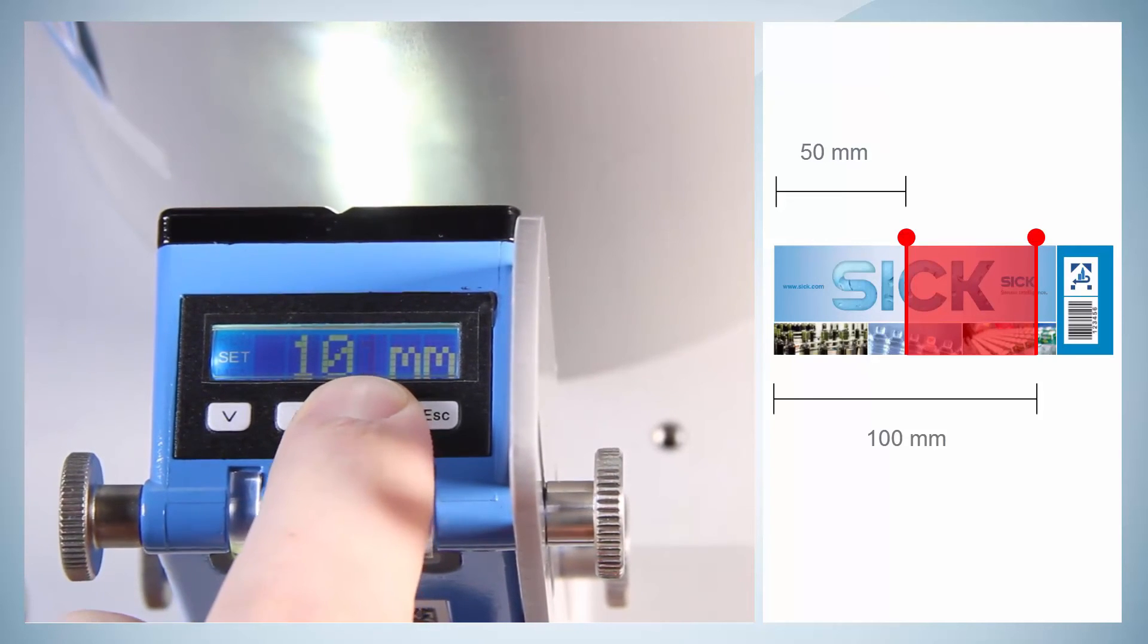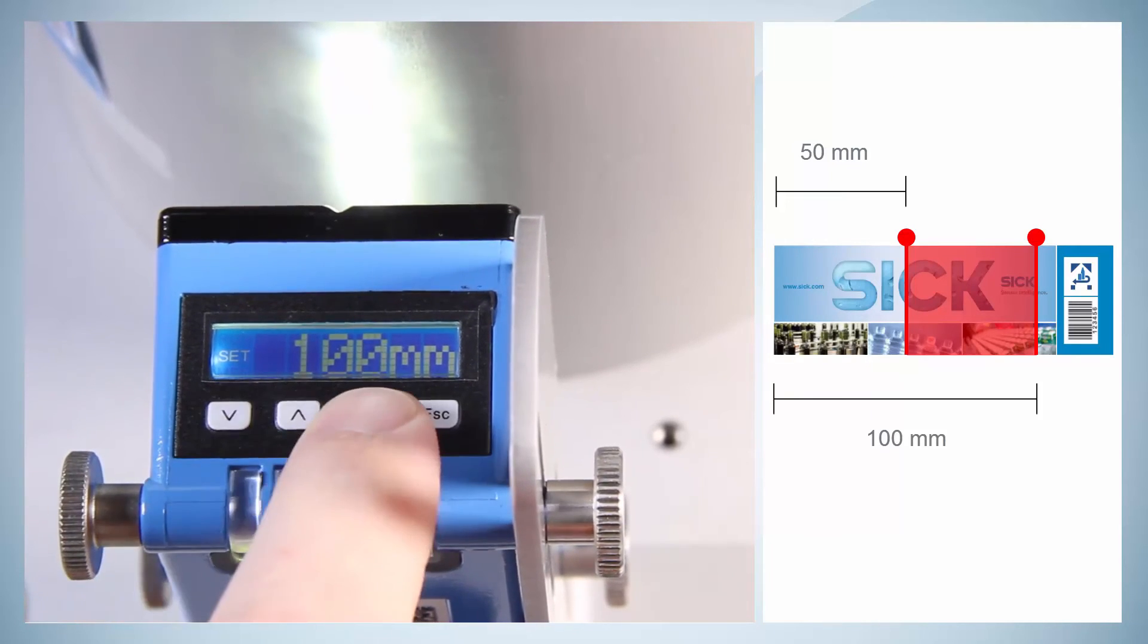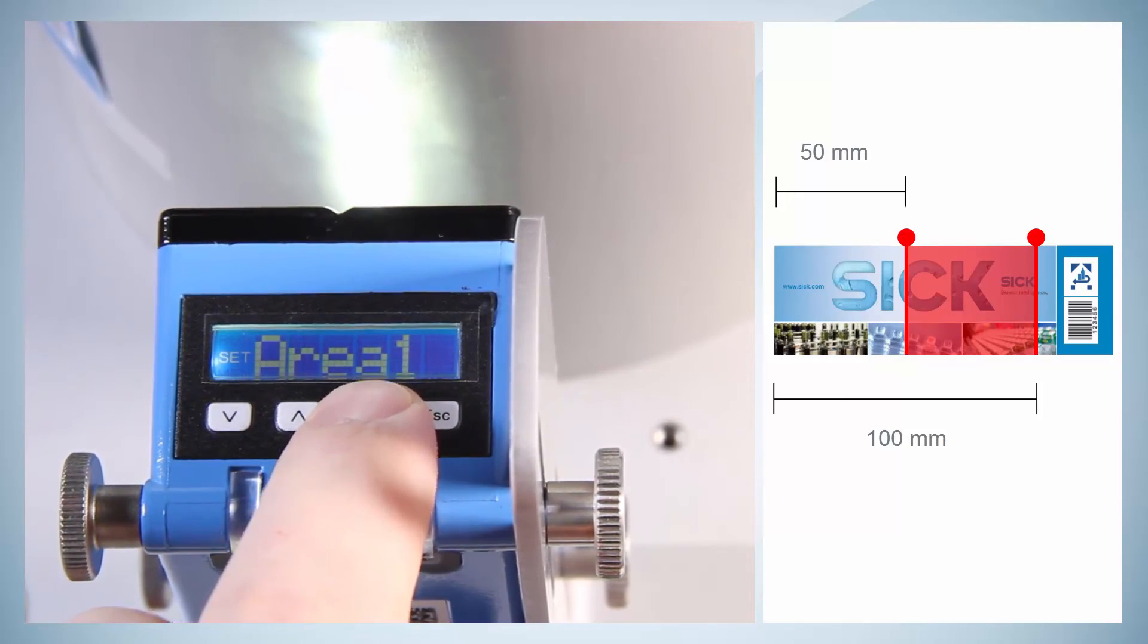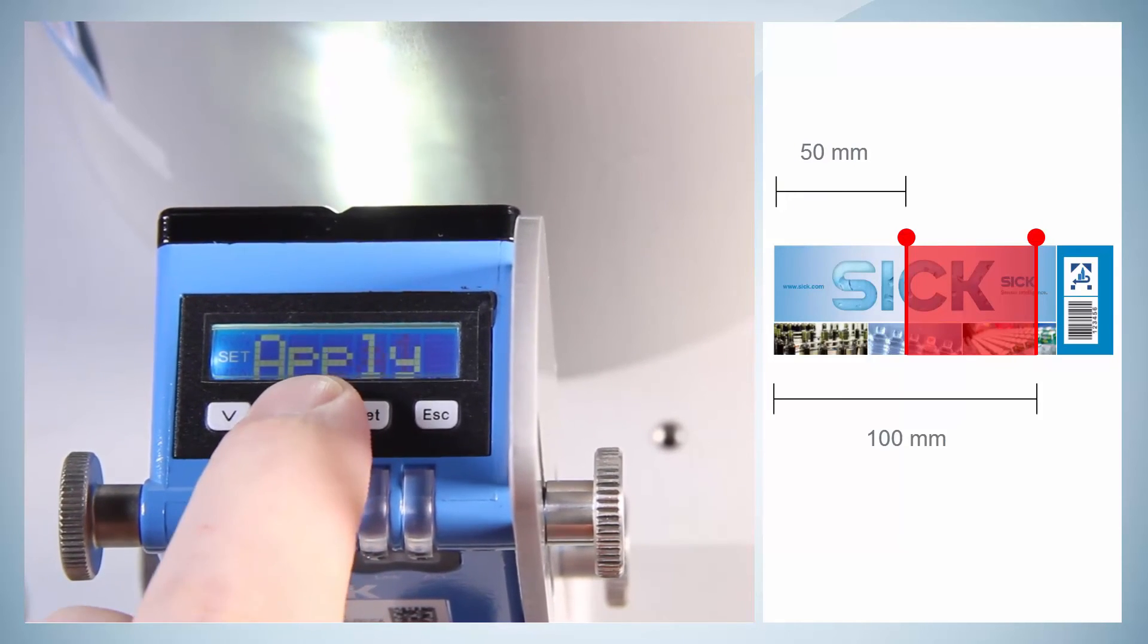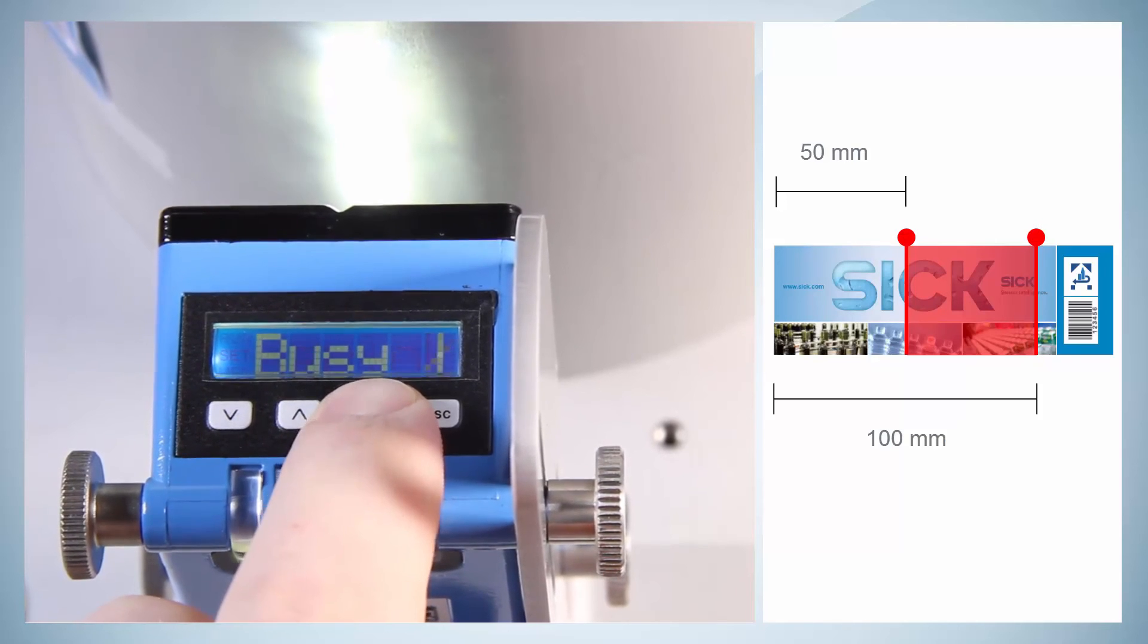If the label is changing in this area, for instance, by a printed best before date, the quality of run keeps stable and an accurate switching is assured. The setting of the blanking is confirmed by apply and the teach-in is recalculated.